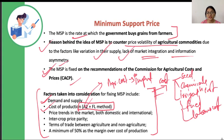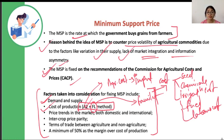Then there is FL — family labor, meaning unpaid labor. If a farmer's whole family is working on the farm but they are not paid for this work, that unpaid family labor is also included in the cost calculation under FL. So A2 plus FL together form the cost of production basis for determining MSP.